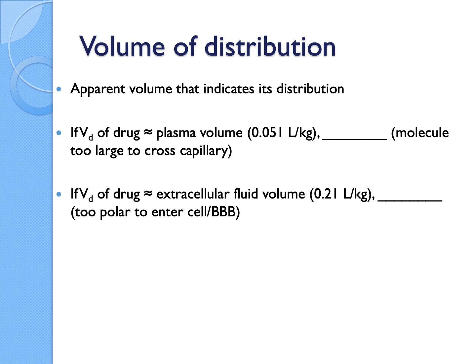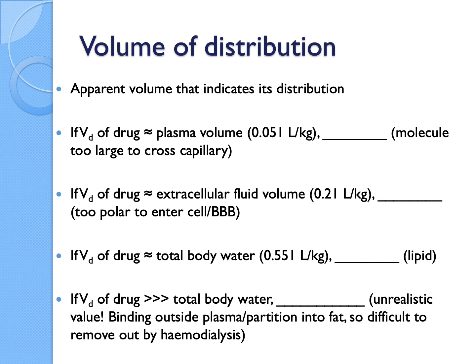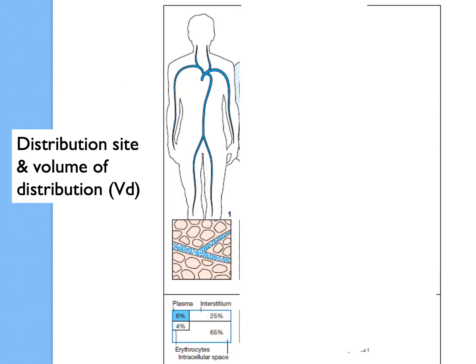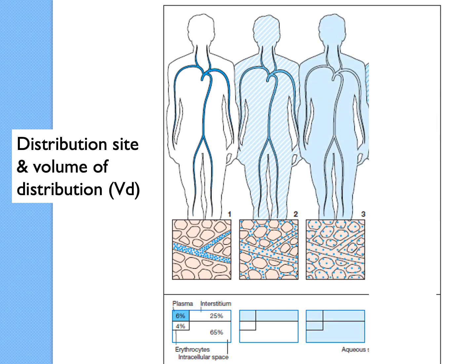If VD is similar to extracellular fluid it would be around 0.2 L/kg. If it's about 0.55 L/kg, it's nearer to total body water. If VD is unrealistically huge, it doesn't mean the drug or person is weird — it's just because plasma concentration may be very low due to the drug being redistributed out of systemic circulation but still within the body. The four VD values correspond to the four distribution models.